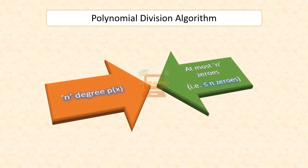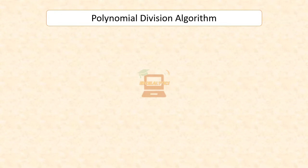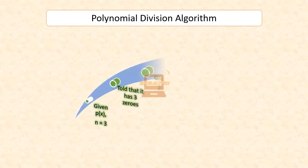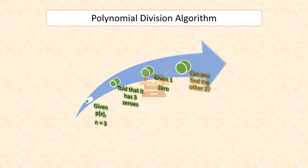We have seen that any n degree polynomial can have at most n zeros. Suppose you are given a cubic polynomial and told it has three zeros. Additionally, you have been given one of the zeros. Can you find the other two?